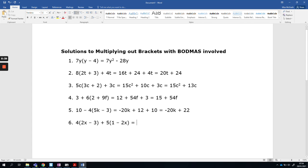So 4 times 2x is 8x, and 4 times minus 3 is minus 12. That's that bracket done. Now we need to do the second bracket: positive 5 times 1 is 5, and positive 5 times minus 2x is minus 10x.